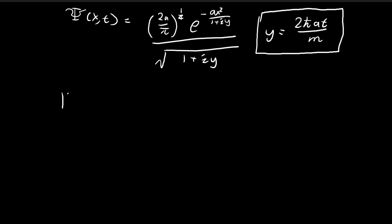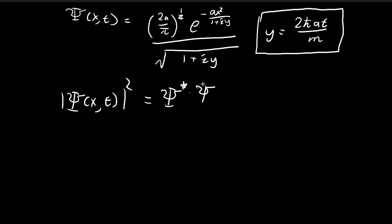We would like to find the absolute value of the wave function squared. We know that this is equal to the conjugate of the wave function times the wave function. So in order to find this, we need to find the conjugate of the entire wave function term.